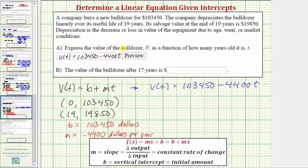Okay. Now, for part B, we're asked to determine the value of the bulldozer after 17 years. So, now we need to find the function value, V, of 17.